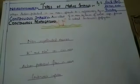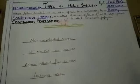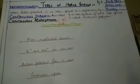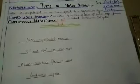And what is actually the types of nerve impulse? There are actually two types of nerve impulse and that is very important according to the short notes.